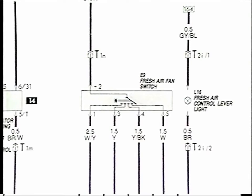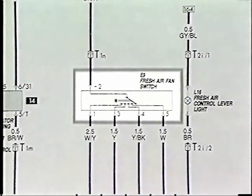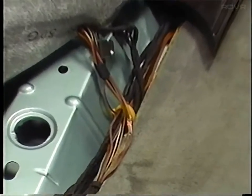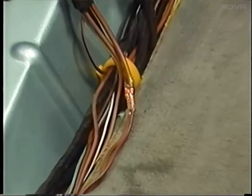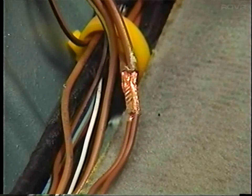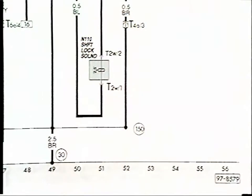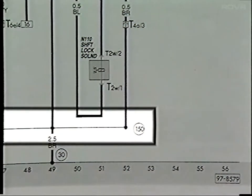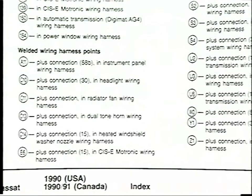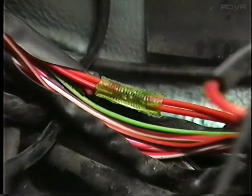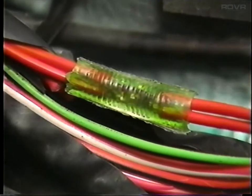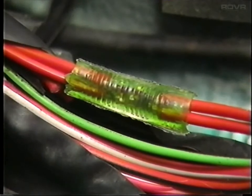Whenever you see fine lines in a wiring diagram, these show the internal wiring connections inside a relay, switch, or some other electrical component. Some connections are also welded inside the wiring harness to reduce the amount of external connections. These connections can be identified using the index, which describes their location. Welded connections are used for both plus and ground connections inside the wiring harness.